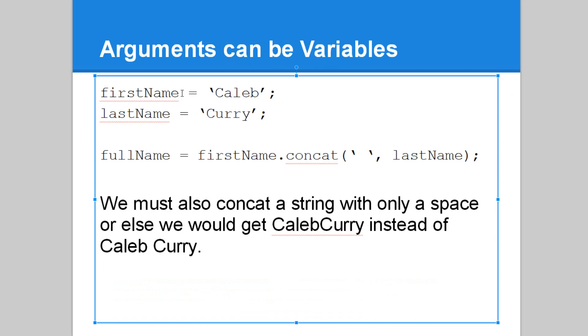Arguments can also be variables. For example, we have first name, which is equal to Caleb. Last name, which is assigned Curry. So, full name is first name, where we add on a space and the last name. The reason we have a space is because if we didn't, we would just get Caleb Curry without a space. And to do that, we just have single quotes to enclose a string that has just a space in it. And then to separate this first argument, we have a comma and then a space, and then we have the second argument, which is last name, or Curry.